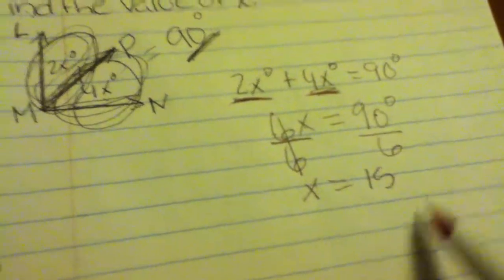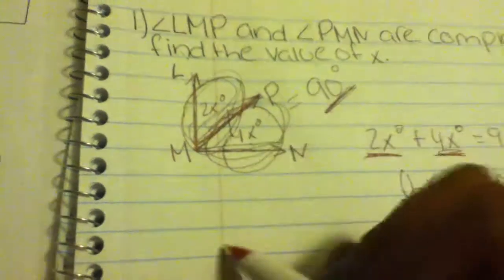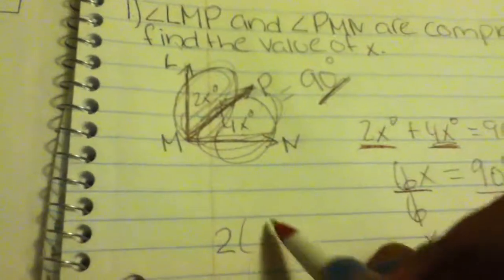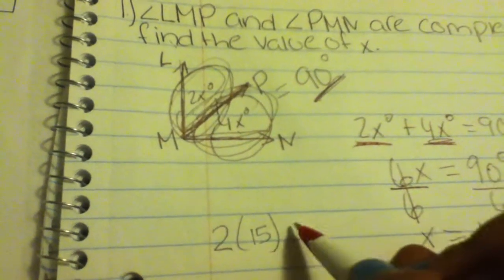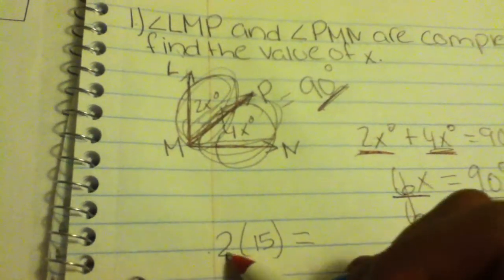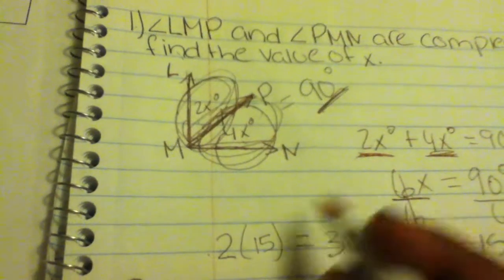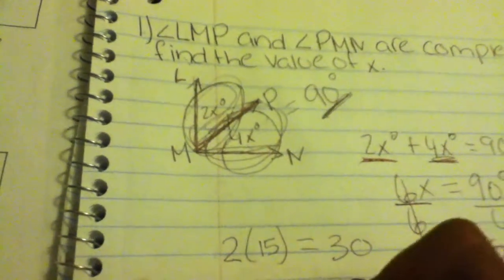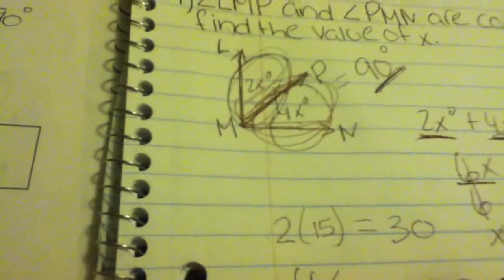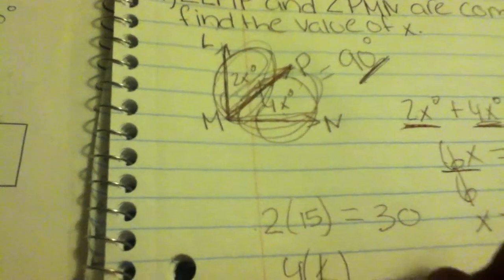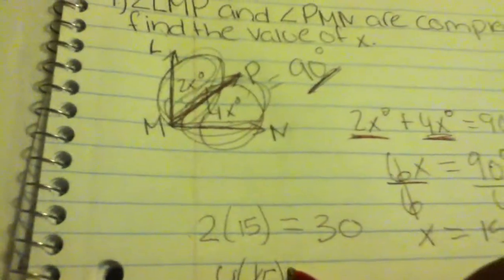You remember the 2x from the beginning, you put the 2 and then substitute 15 for x. You multiply them which equals 30. Then you do the same to the other angle and instead of putting x you put 15, you multiply them and you get 60.